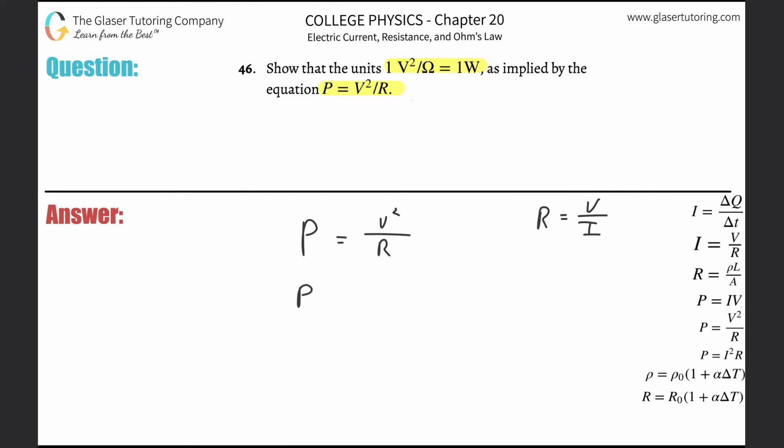So what I'm going to do then is substitute that on in, so we got V squared over, now V over I.